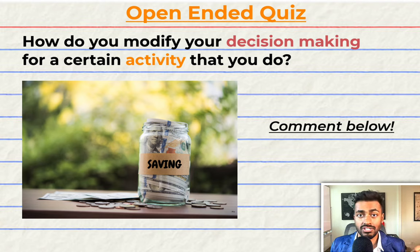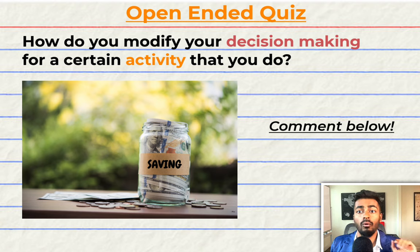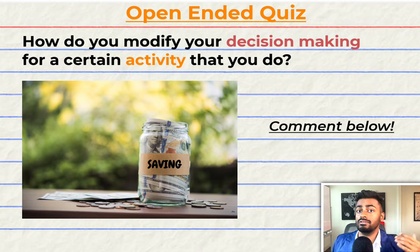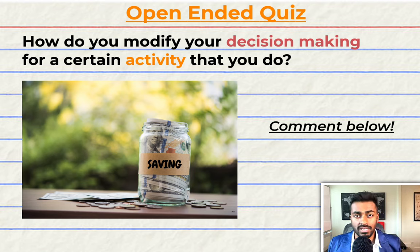Greetings fellow learners! Before we embark on our journey towards understanding proximal policy optimization, I have a question for you. How do you modify your decision-making for a certain activity? What does it take to modify your decision-making? Can you express this in words? This could be your decision-making on how you invest money, your exercise routine, or anything else. Share your thoughts in the comments below — I would love to hear them.